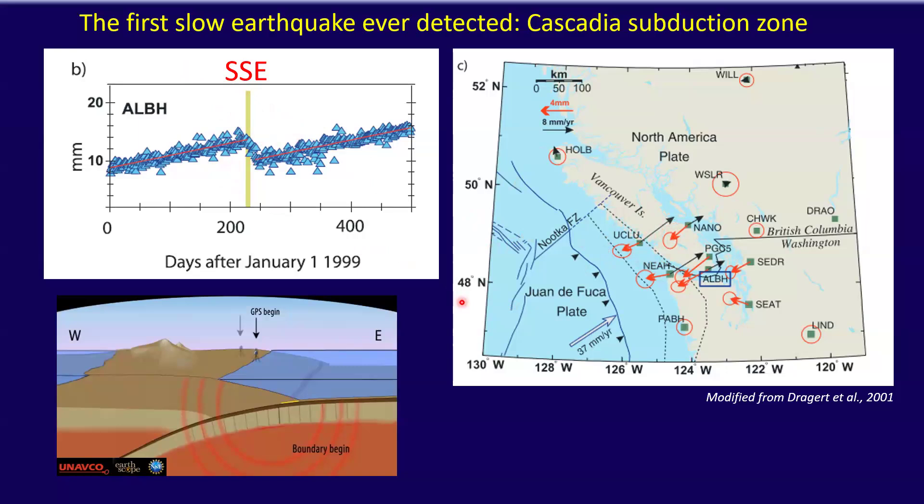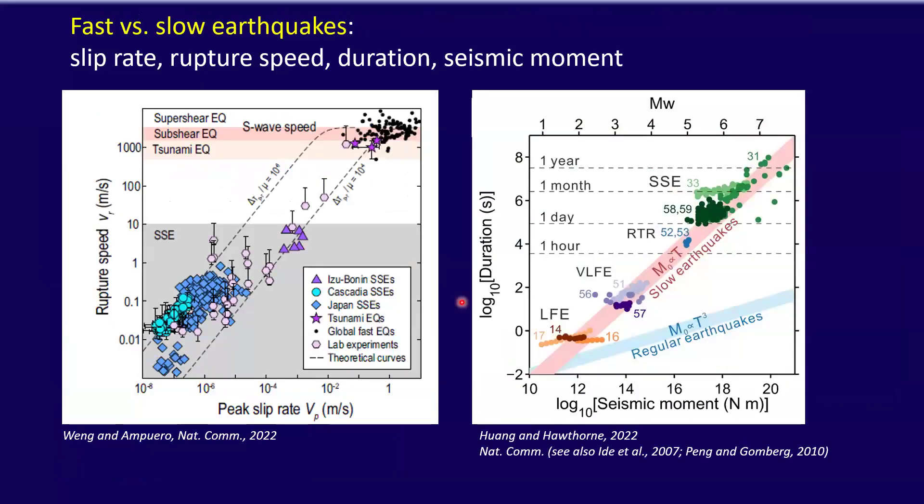So what's the difference between fast and slow earthquakes? As the name can suggest, the slip rate in slow earthquakes is significantly lower with respect to regular earthquakes. As you can see in this diagram, it goes from slightly above plate rate to about a few microns per second, with respect to an earthquake where the fault slips at about one meter per second.